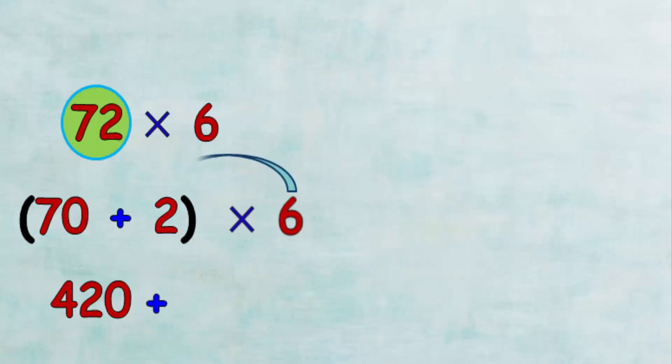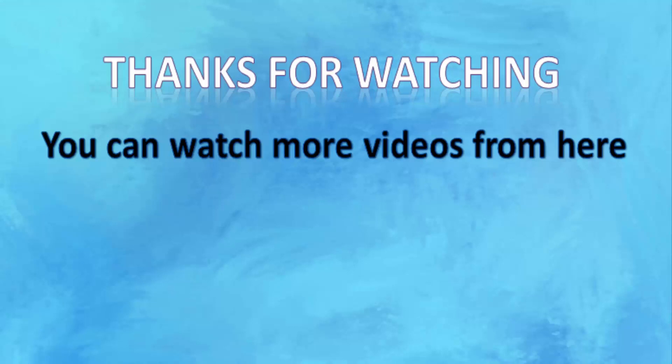And multiply 6 by 2, which equals 12. Therefore the sum of 420 and 12 is 432. I hope it will be a simple method.